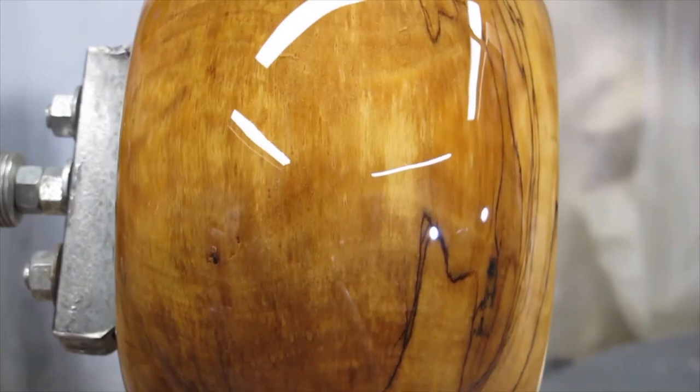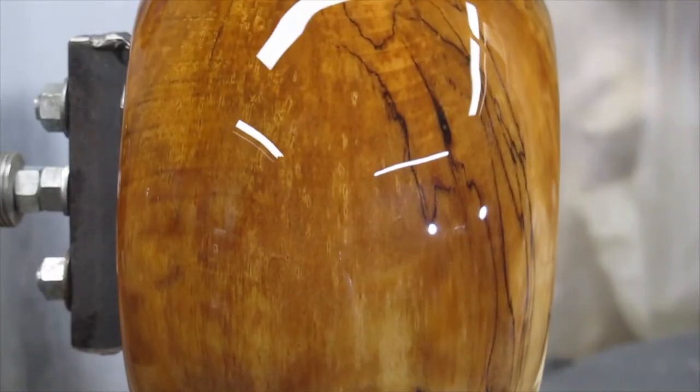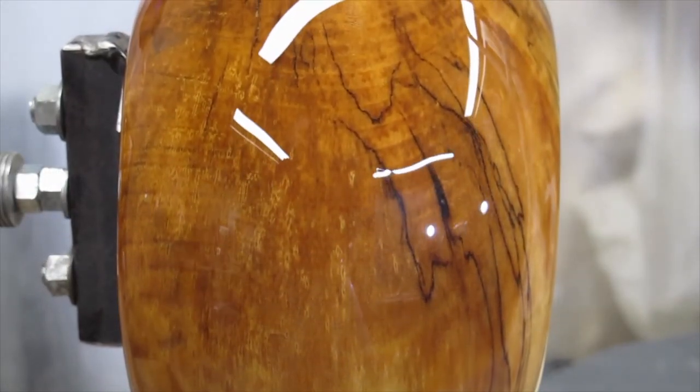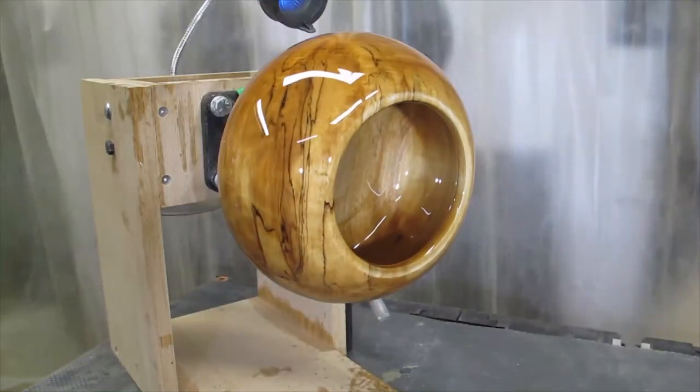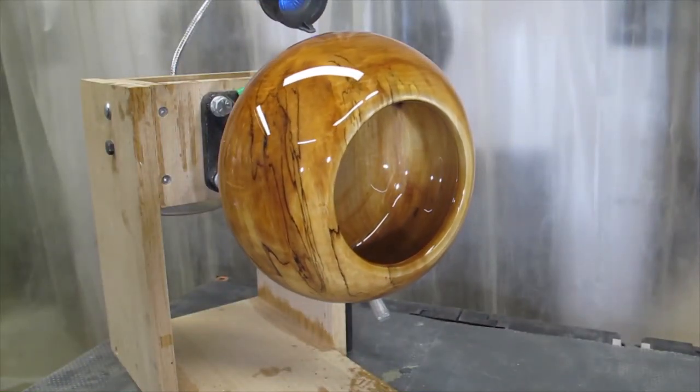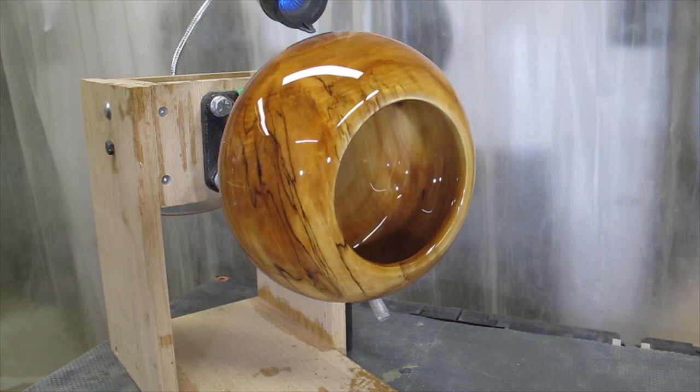This is the finish on the outside of the bowl. The resin hasn't cured yet but it is a nice finish. I will let it keep rotating on the rotisserie for six hours until the resin is cured enough that it will no longer run.